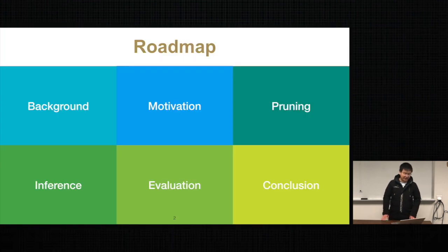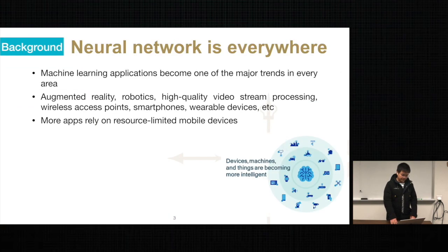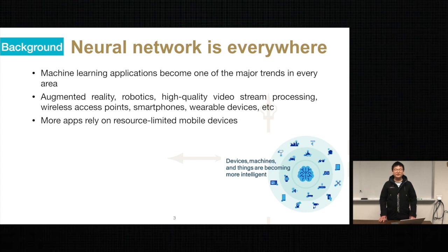First, let's look at some background information about DNN execution. Nowadays, machine learning is becoming increasingly popular. Deep neural networks have emerged as a fundamental element in machine learning applications due to their high accuracy and excellent scalability. Many applications such as image classification, object detection, and neural language processing highly rely on DNN models.